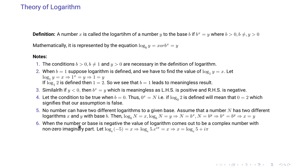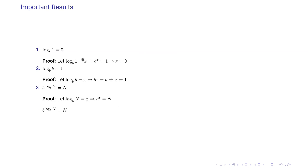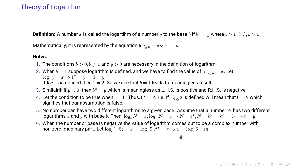Point six states that when the number or base is negative, the value of the logarithm comes out to be a complex number with non-zero imaginary part. For example, let log of minus 5 with base e equal x. Since minus 1 equals e to the power iπ by Euler's formula (e to the power iπ plus 1 equals 0), we write log of 5·e^(iπ) with base e, and x becomes log of 5 with base e plus iπ.